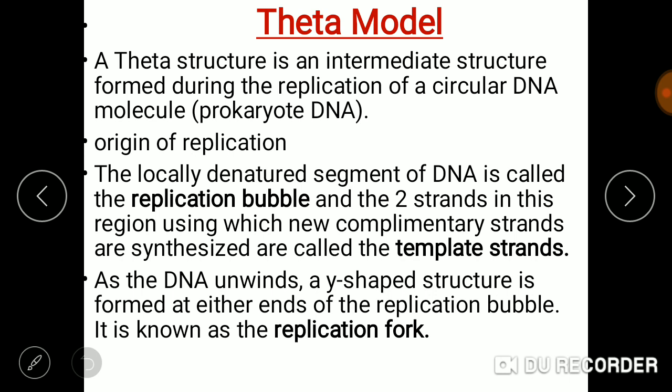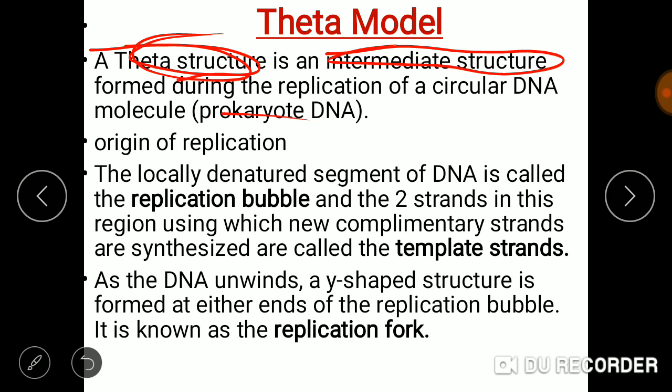First is the theta model. A theta structure is an intermediate structure formed during the replication of circular DNA molecules in prokaryotic DNA. During DNA replication, a theta-like shape structure is formed, so it is called the theta model.